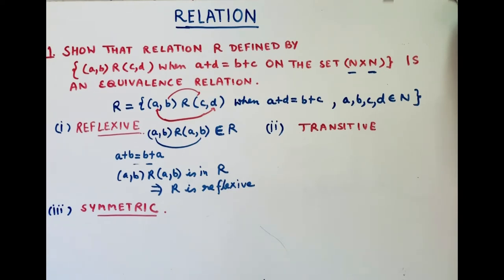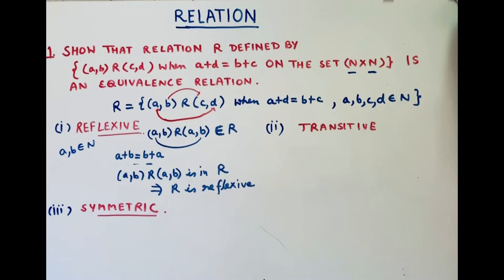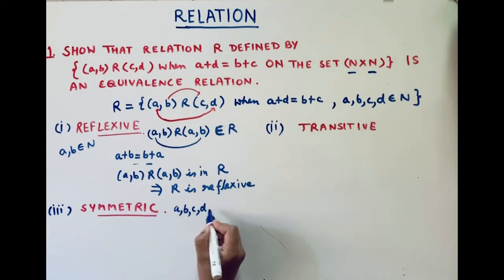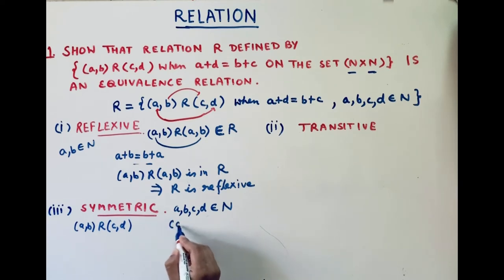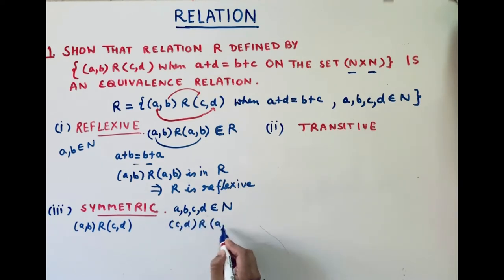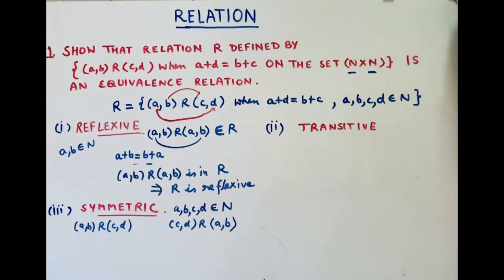Now we will check for symmetric. Here we have taken that (a,b) is from set N×N. For symmetric, let's take four elements (a,b) and (c,d) that belong to N×N. For symmetric, we have to check that if (a,b) is related with (c,d), then (c,d) should also be related with (a,b). If both these relations hold, then R is symmetric.